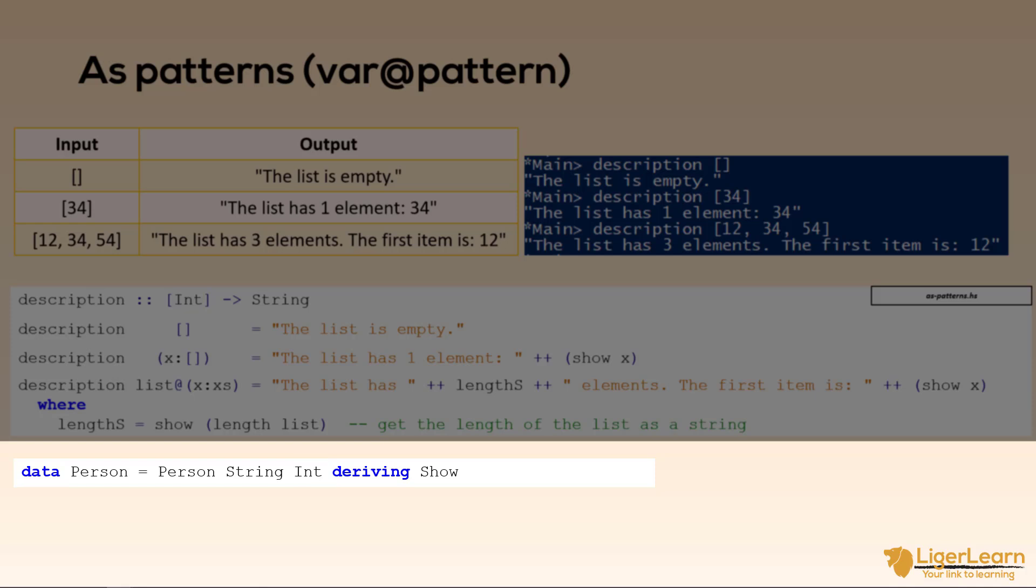Now we define a function called describe which takes a person and returns a string. We use an as pattern to bind a variable name to the whole person which I've called p as well as deconstruct the person's constituent parts in our pattern.